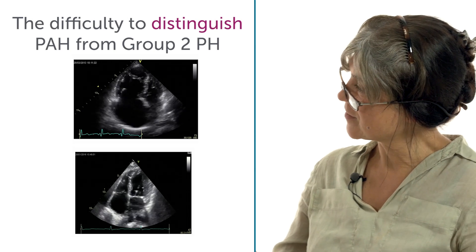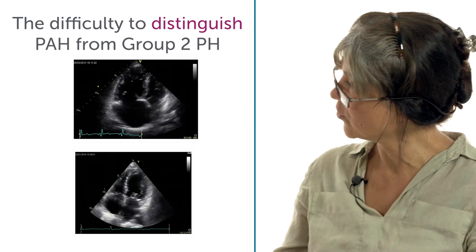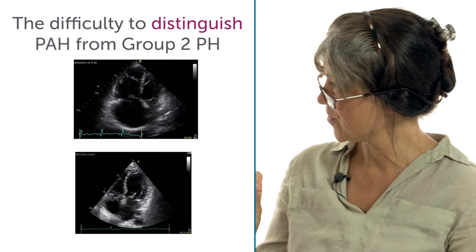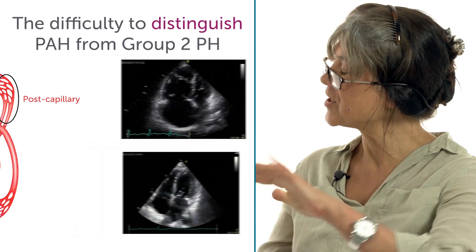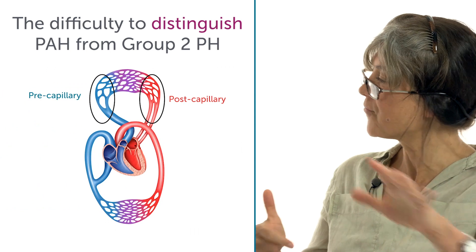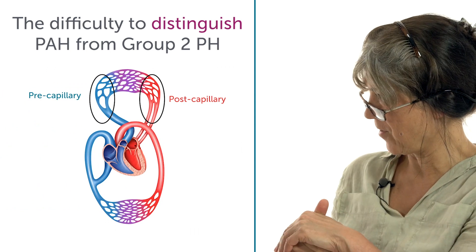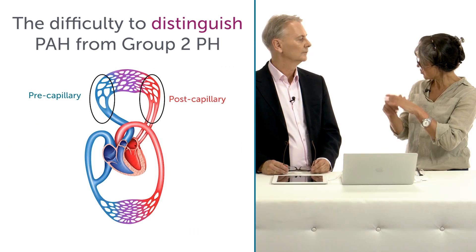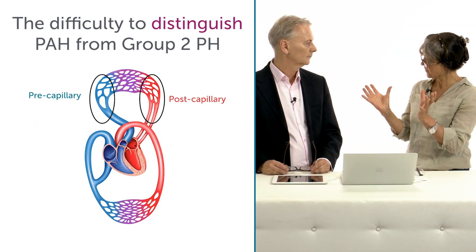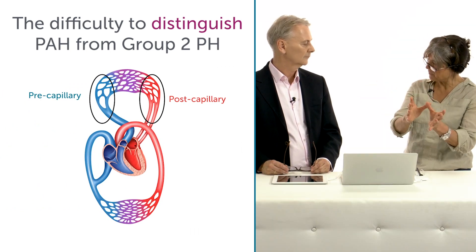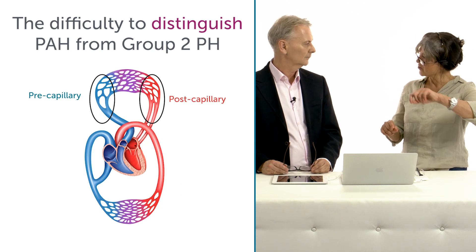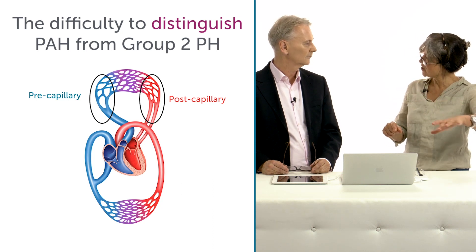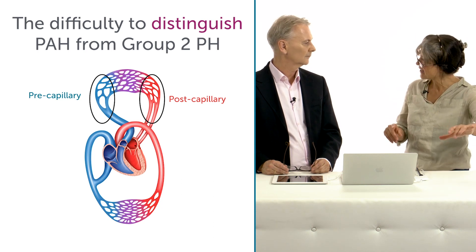There are two key questions when you diagnose pulmonary hypertension. The first is to separate pre-capillary from post-capillary, because it's clinically relevant. If you have pre-capillary, you have drugs available, you have a treatment strategy, and you have genetics to consider.